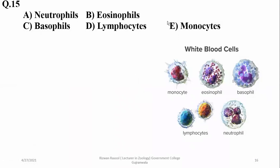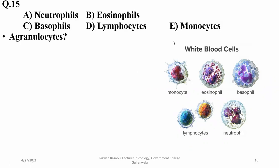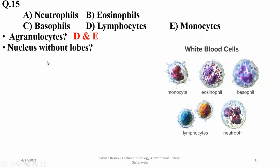Here are some blood cell types listed, and many questions can be asked about them. Which of the following are agranulocytes? Lymphocytes and monocytes do not have any granules in their cytoplasm, so they are agranulocytes. A circular nucleus without any lobes is found in lymphocytes, whereas monocytes have a lobed nucleus; neutrophils have two-to-five lobes, basophils have bilobed nuclei, and eosinophils are also lobed — but no lobes are found in lymphocytes.